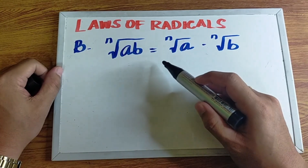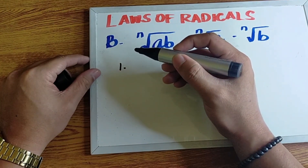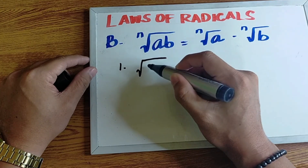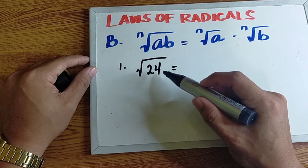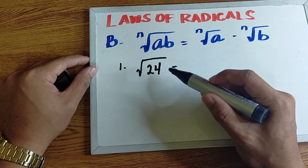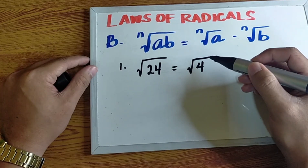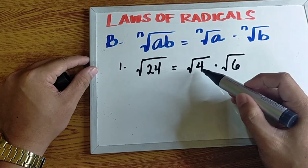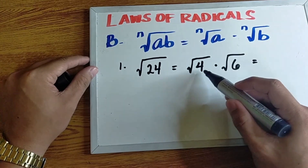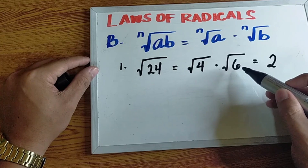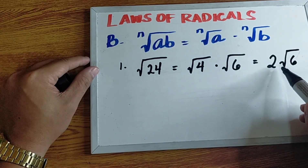Law B: the nth root of ab is equal to the nth root of a times the nth root of b. For example, square root of 24 — we think of two factors of 24 where one has a perfect square root. We rewrite it as square root of 4 times square root of 6, since 4 times 6 equals 24 and 4 has a square root. The square root of 4 is 2, so the square root of 24 equals 2 times square root of 6.